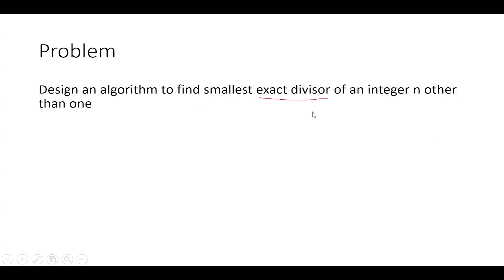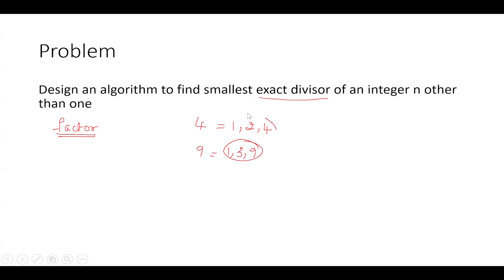smallest exact divisor of an integer N, other than one. What is the meaning of this? We are talking about factors — when I say 'exact divisor,' it is nothing but the word 'factor.' A factor of a number is an exact divisor of that number. For example, the factors of 4 are 1, 2, and 4. Two completely divides four with zero remainder. Similarly, the factors of 9 are 1, 3, and 9. So we have to find the divisor of any given number apart from 1 and print it as output.